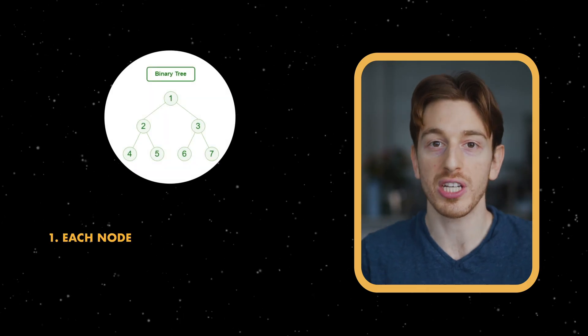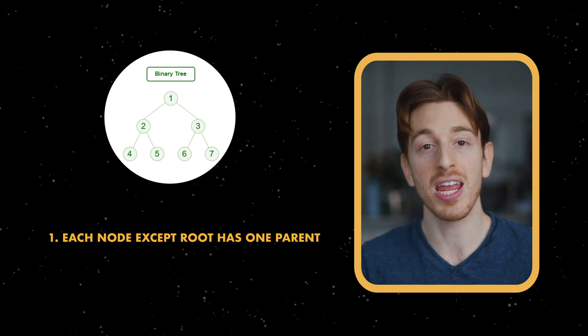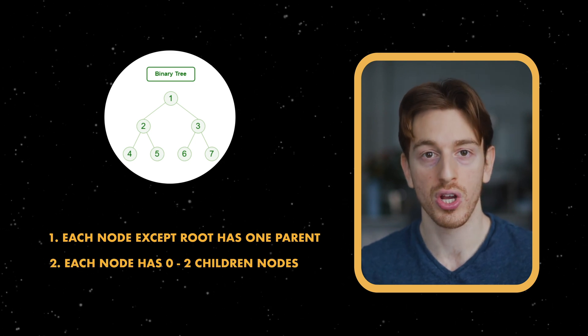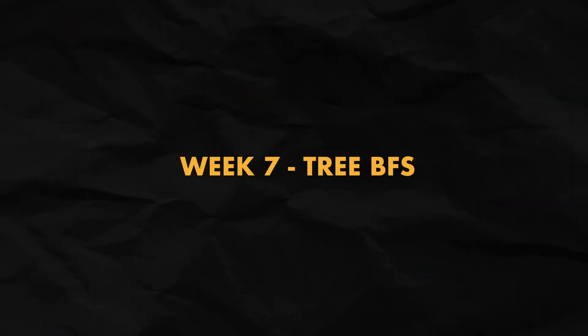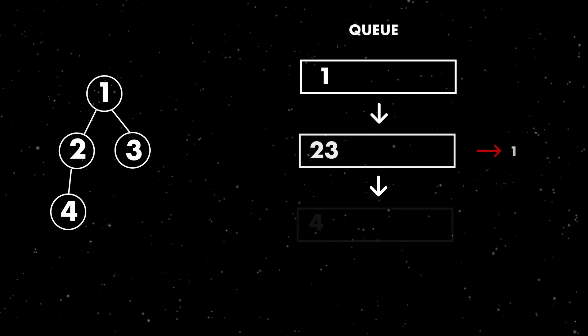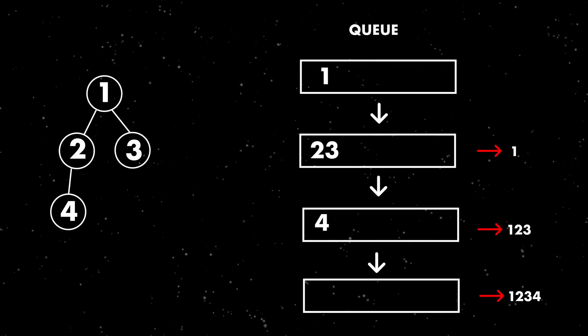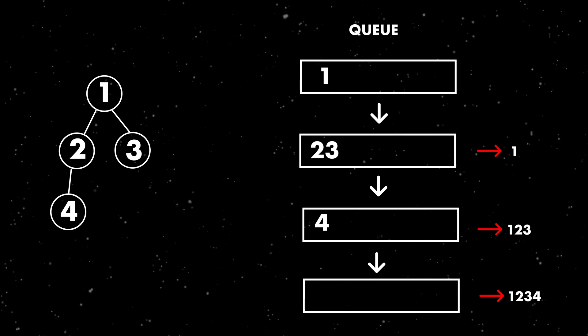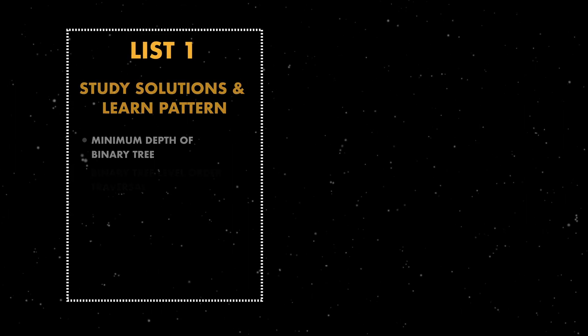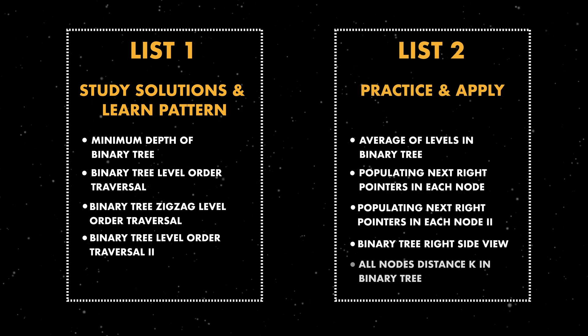The next large topic is binary trees. A binary tree is a special case of a graph where each node has one parent except the root and anywhere from zero to two children. All binary tree questions are about traversing them. In week 7, we focus on BFS for level-order traversal — we push the root into a queue and process the whole tree level by level. Nodes that enter the queue first are processed first, and the questions are quite similar once you grasp the overall pattern.